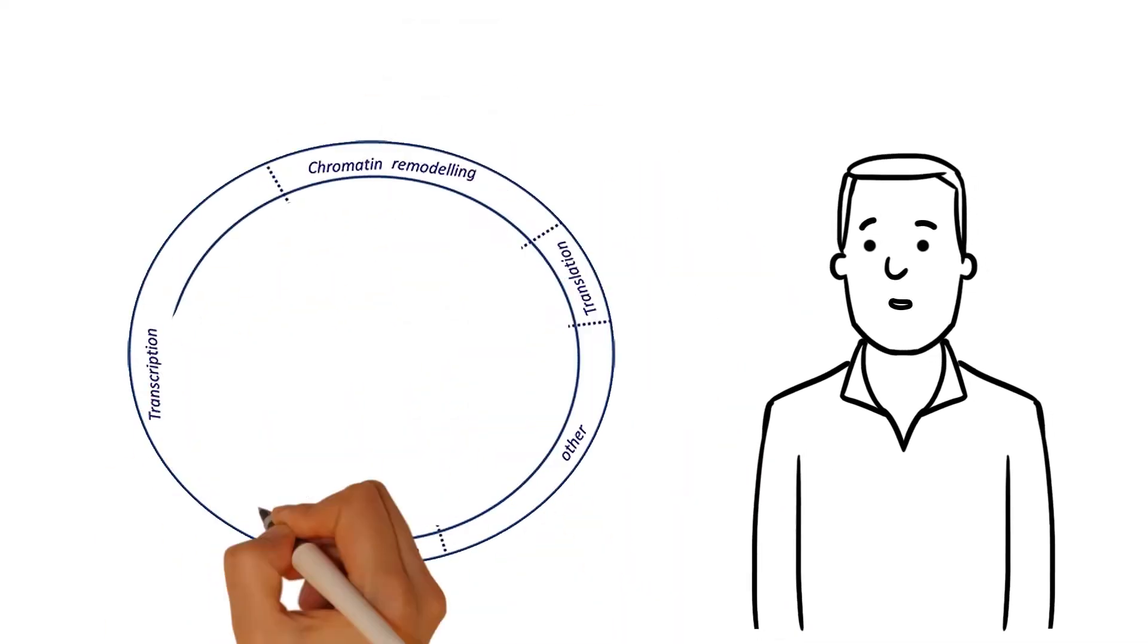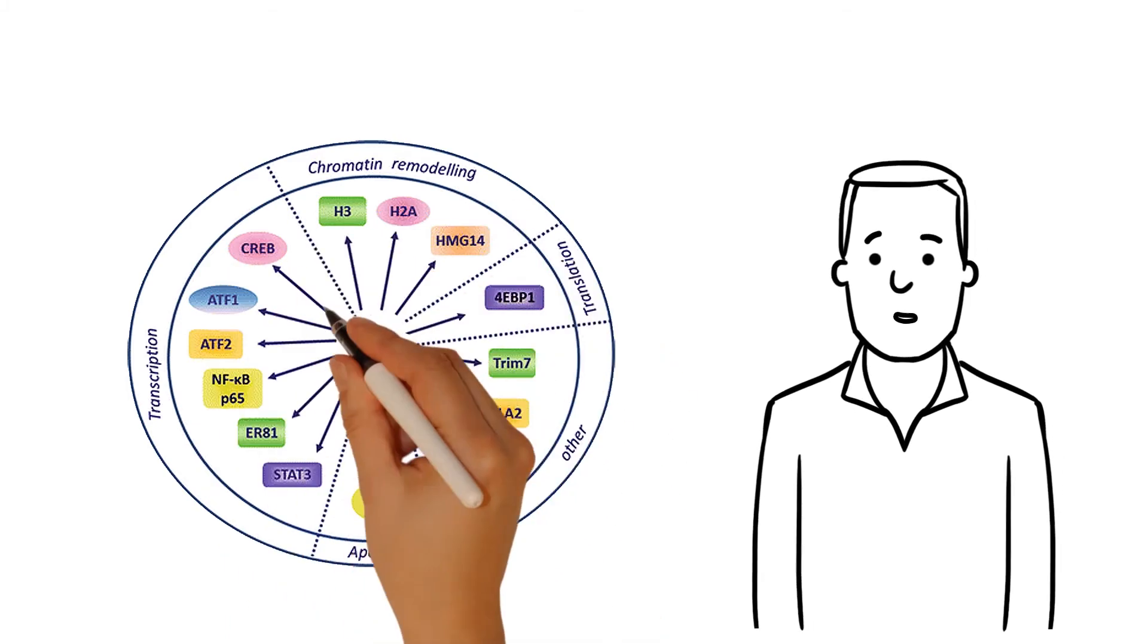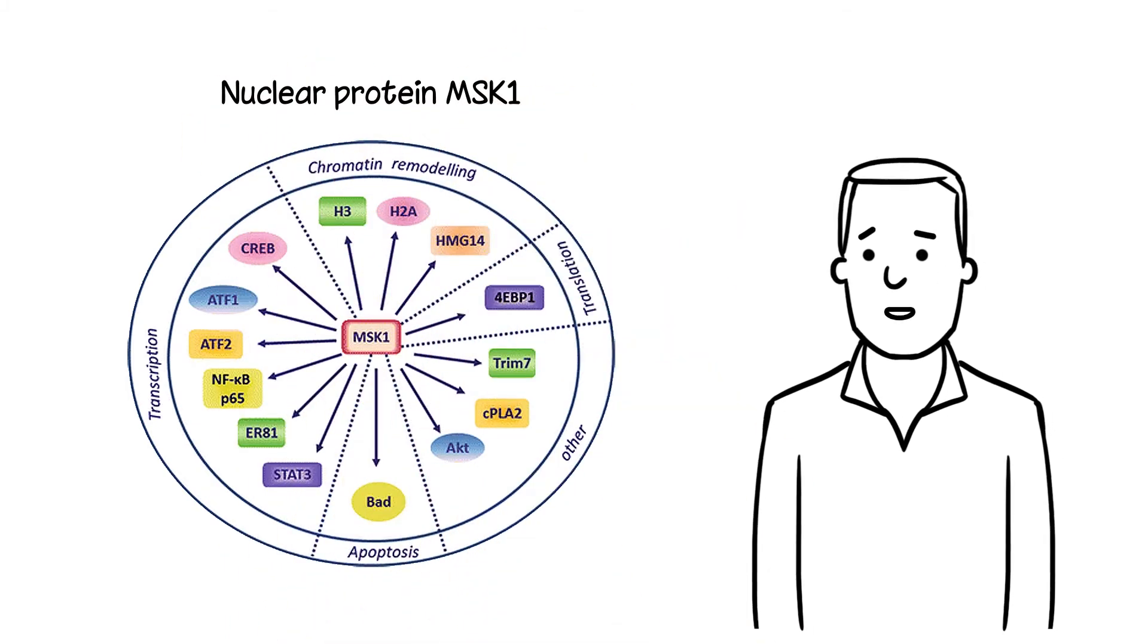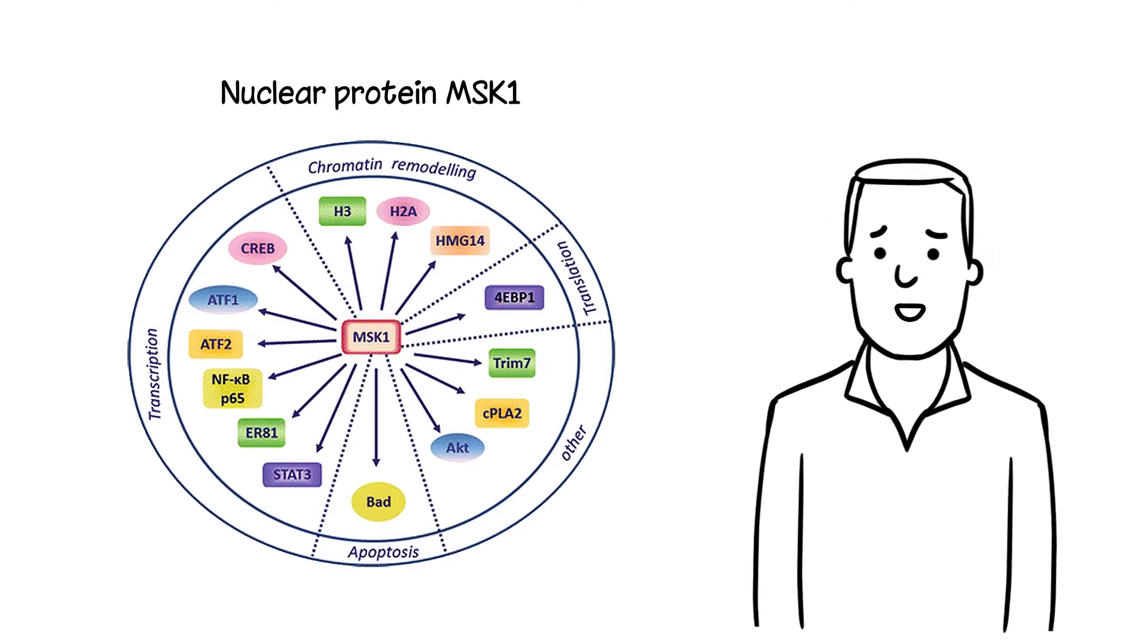Such a concentration level makes it possible to inhibit the activity of the nuclear protein MSK1, whose unnaturally escalated activity is a cause of uncontrolled inflammation.